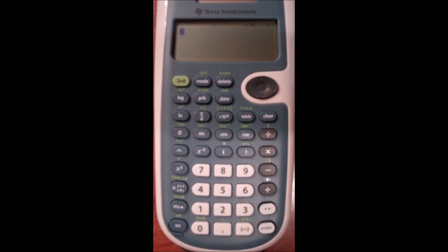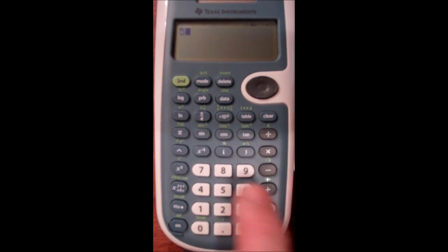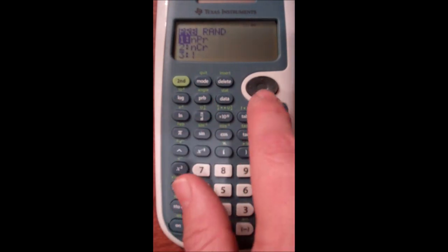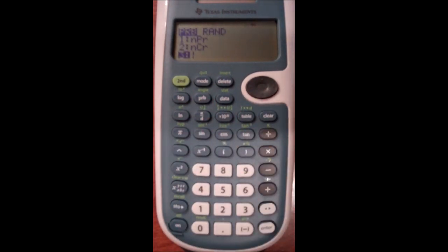If I had five students and I was curious how they could arrange themselves in an ordered list, I would look at my five students and hit my PRB button and use the factorial button. The factorial button is just under PRB factorial, and I get my five factorial. It gives me 120 different ways that five people could arrange themselves in order where order matters.